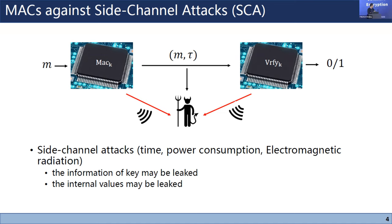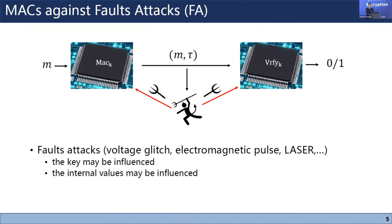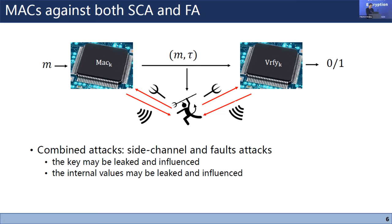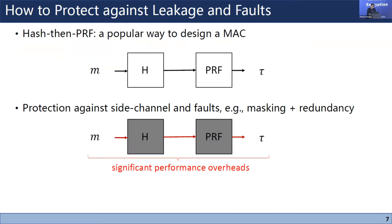In physical implementations, adversaries can learn additional information through side-channel attacks — timing or power consumption — to obtain information about the key or internal values. Even worse, an active adversary can inject faults using lasers or electromagnetic pulses, potentially inferring the key and internal values. Combined attacks using both side-channel and fault techniques are also a concern.